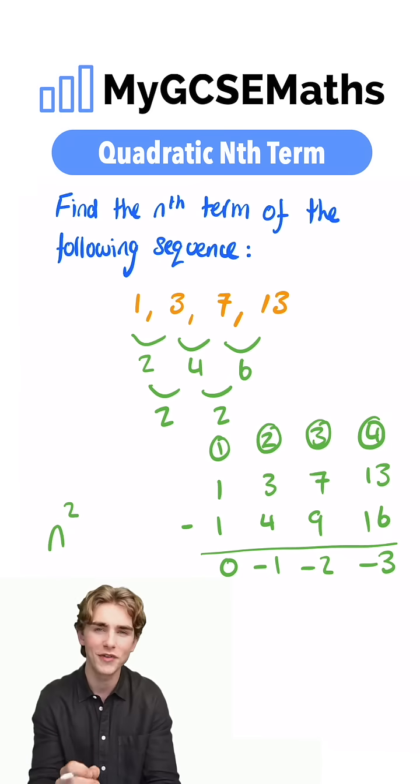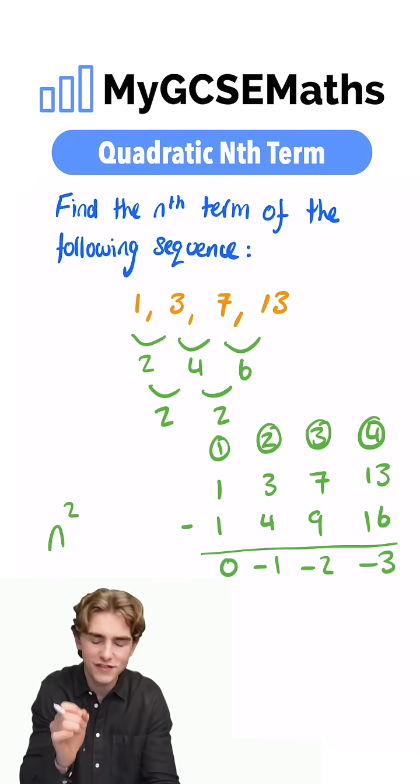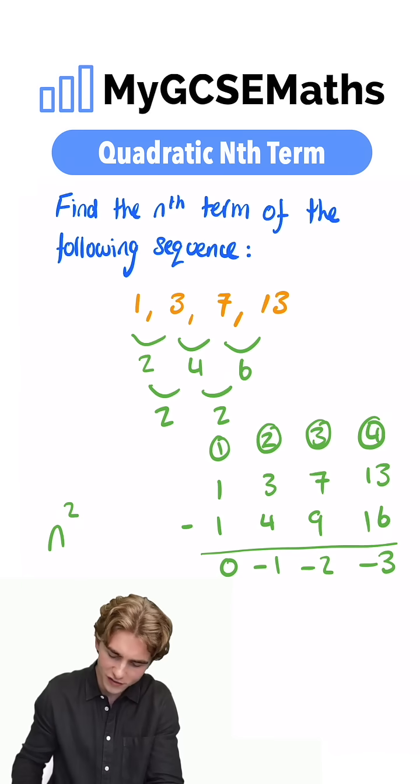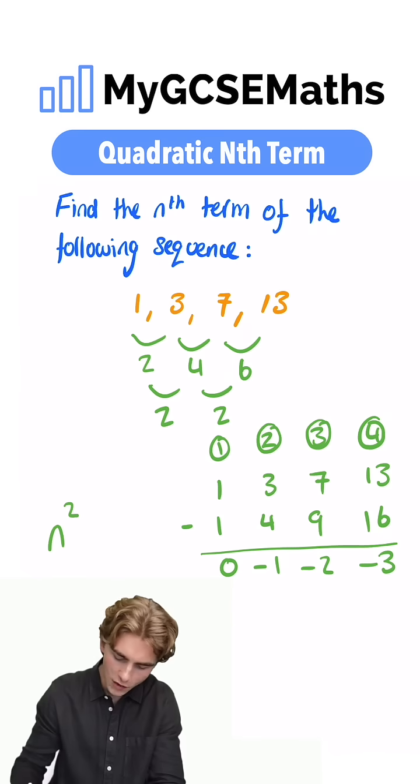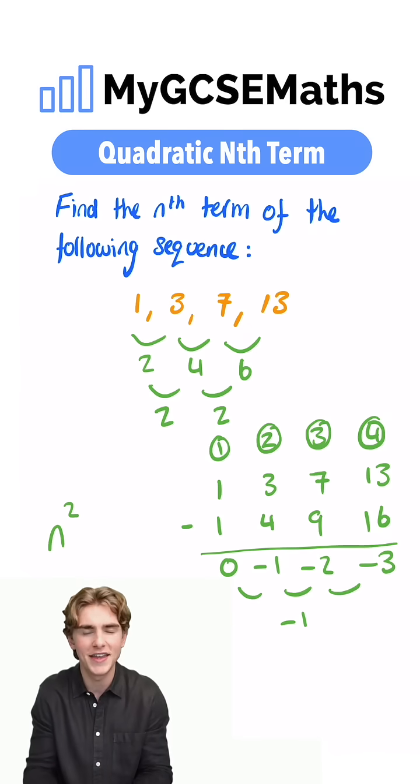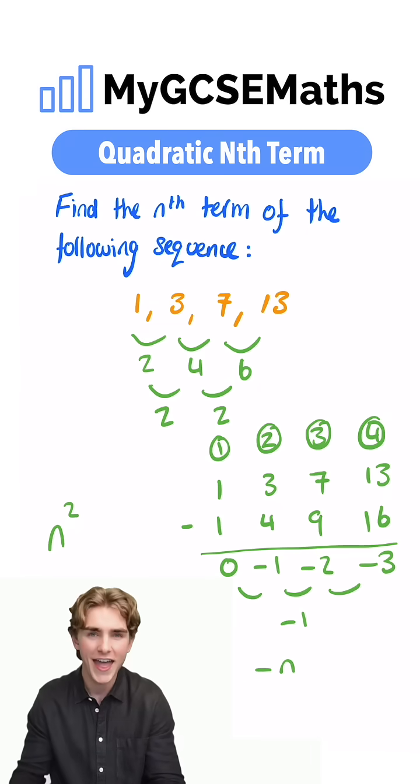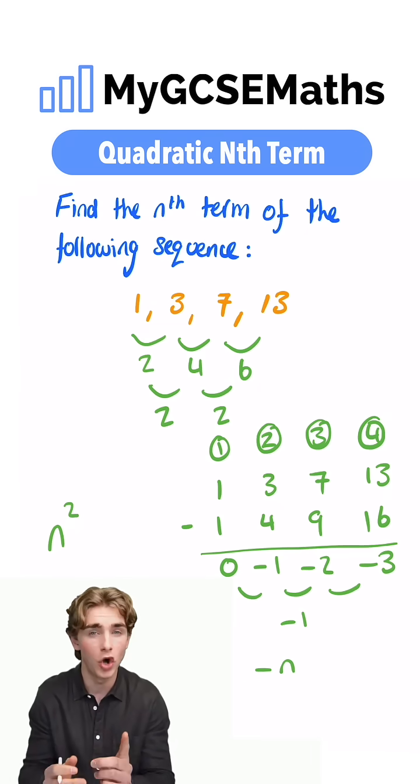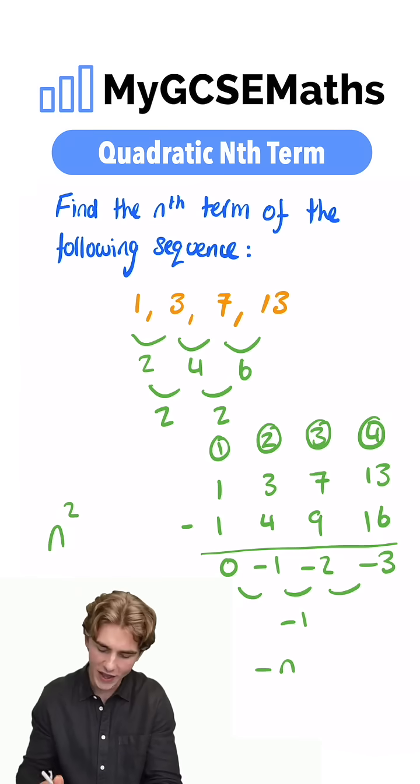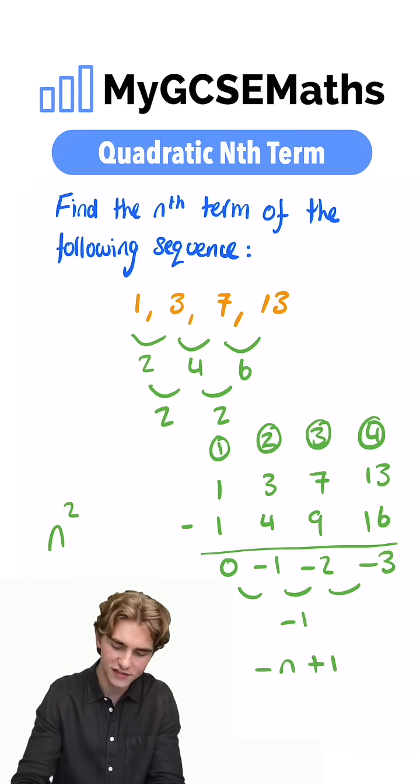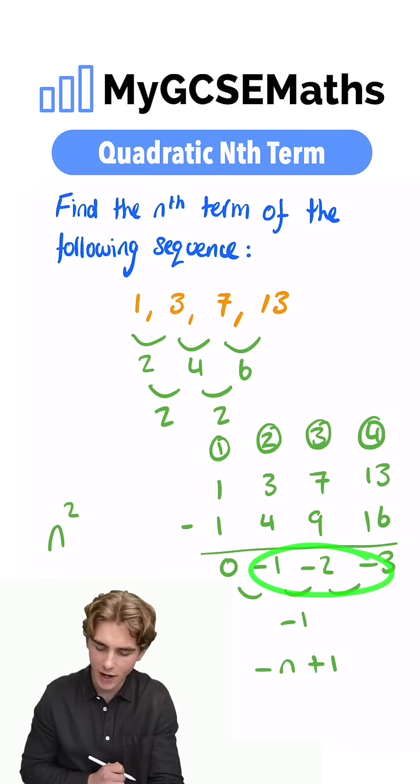Our final step, guys, is going to be to find the nth term of this new sequence here. So what's the nth term of this going to be? Well, our common difference here is negative 1, and that means that the coefficient of n is going to be negative 1. So we have negative n, and then how do we get from negative 1 to our first number? We add 1, so our nth term of this sequence here is going to be minus n plus 1.